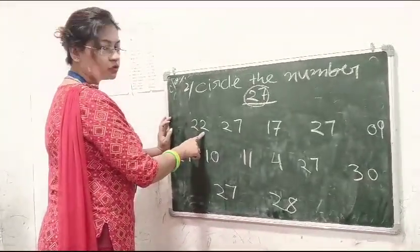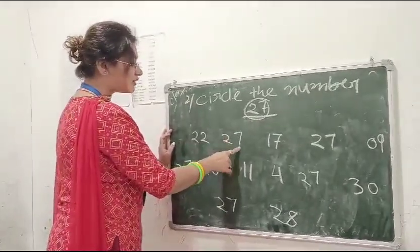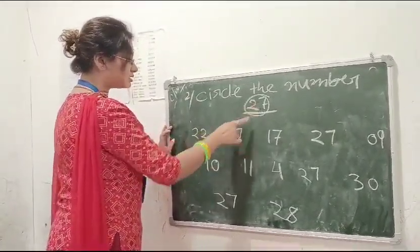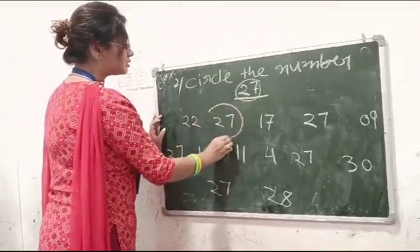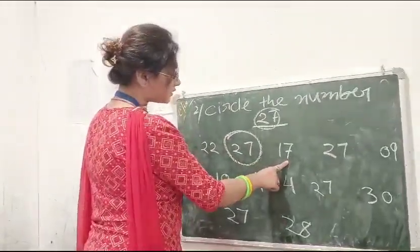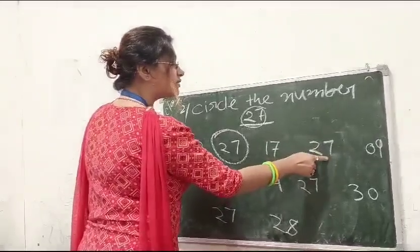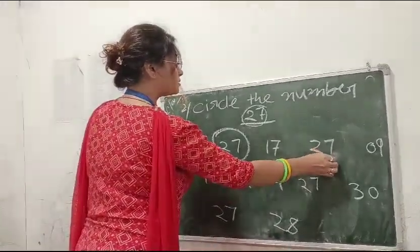Okay. 22, 22. 27, 27. It's 27. So, circle it. Then, 17, 17. Then, 27. 27. Circle it.